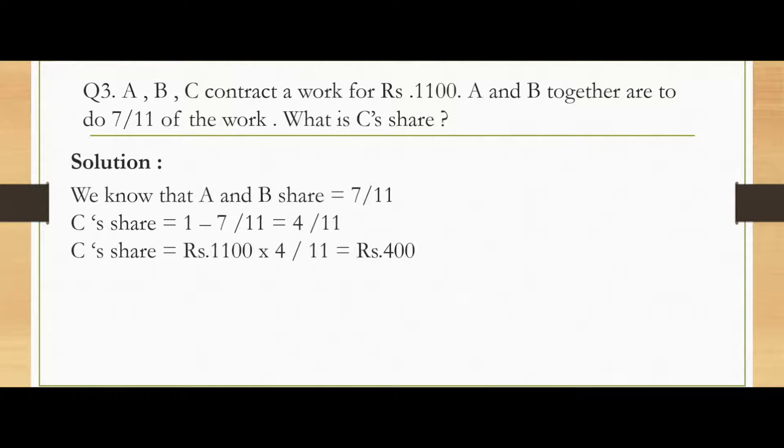Next question: A, B and C contract a work for Rs.1100. A and B together are to do 7 by 11 of the work. So if the total work is 1, then A and B together are doing 7 by 11 of that work. What is C's share in 1100?